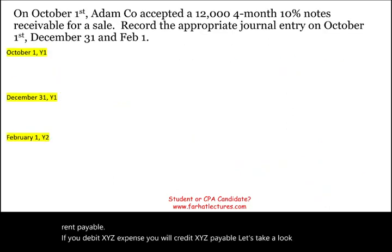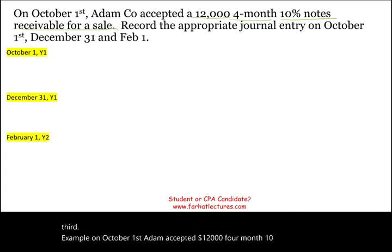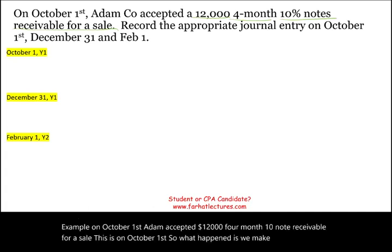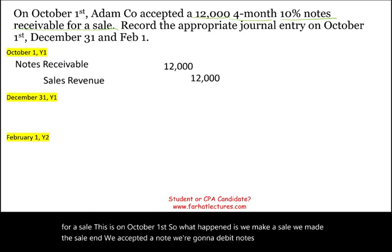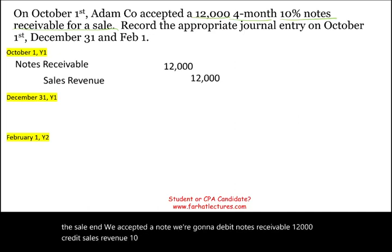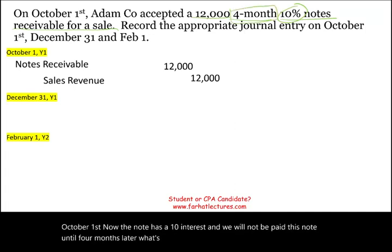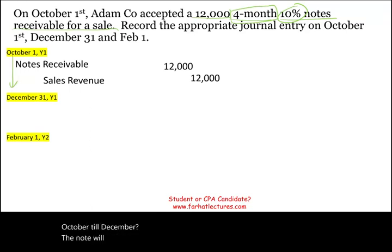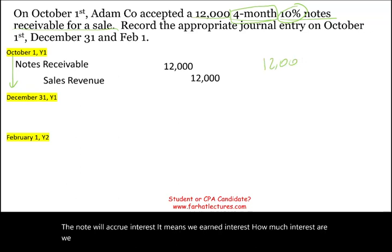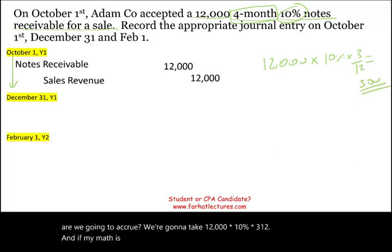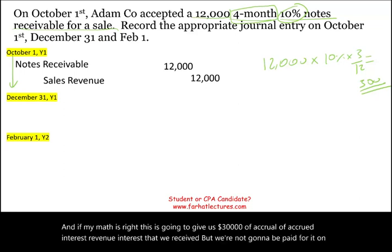Let's look at the third example. On October 1st, Adam accepted a $12,000 four-month, 10% note receivable for a sale. We debit notes receivable $12,000 and credit sales revenue $12,000. The note has 10% interest and won't be paid until four months later. From October through December, the note accrues interest — meaning we earned interest. The accrual is $12,000 × 10% × 3/12, which gives us $300 of accrued interest revenue.